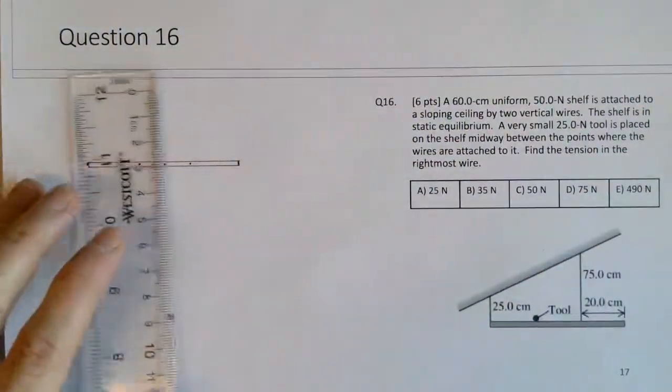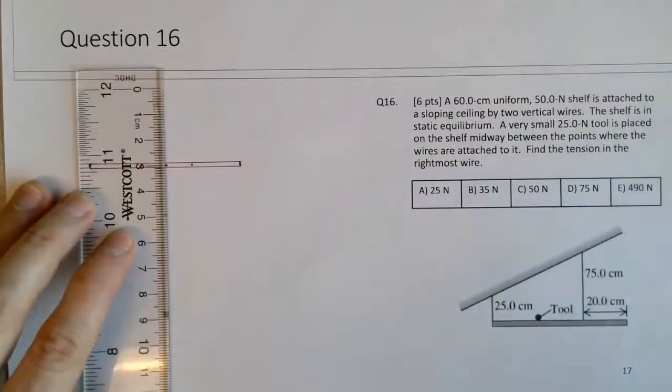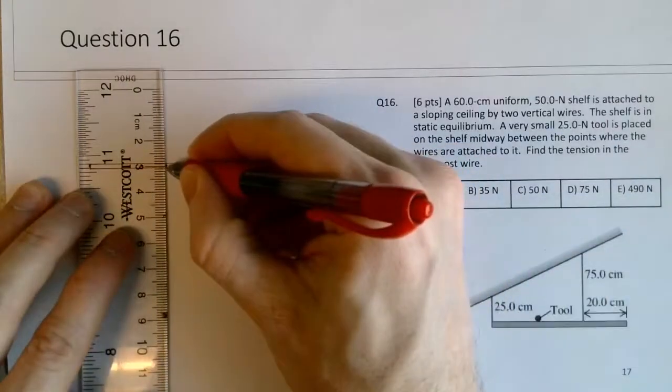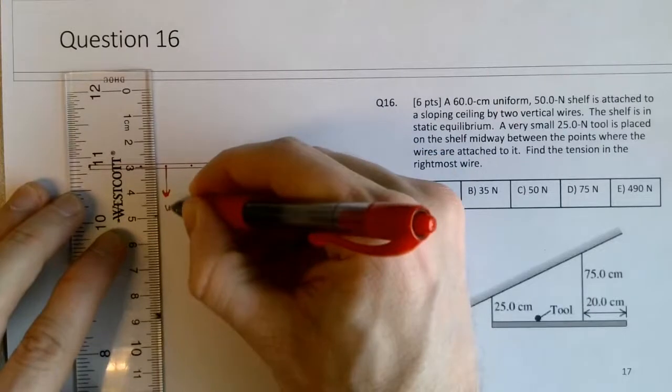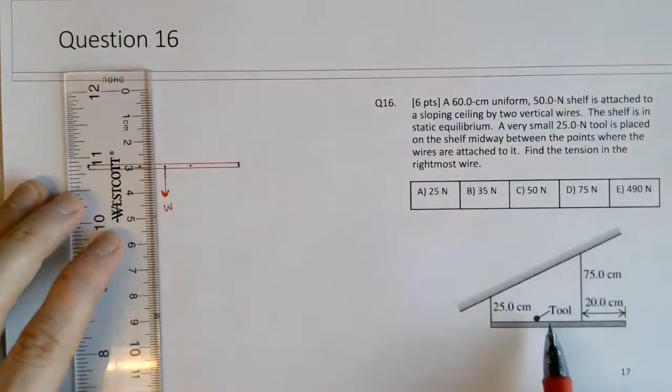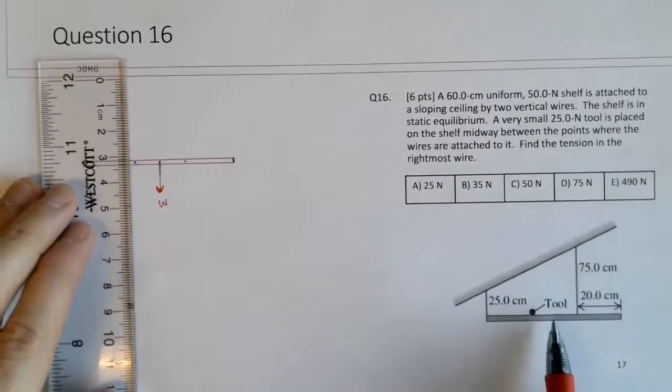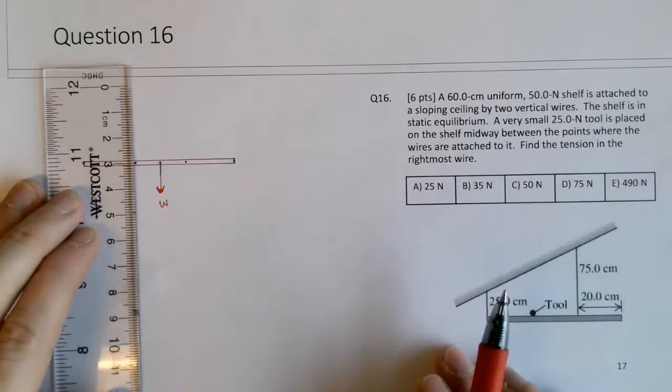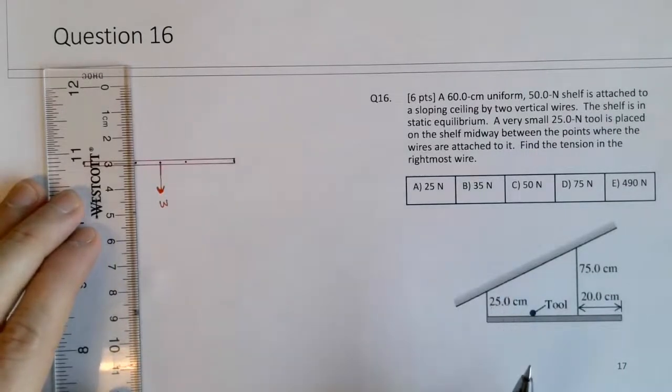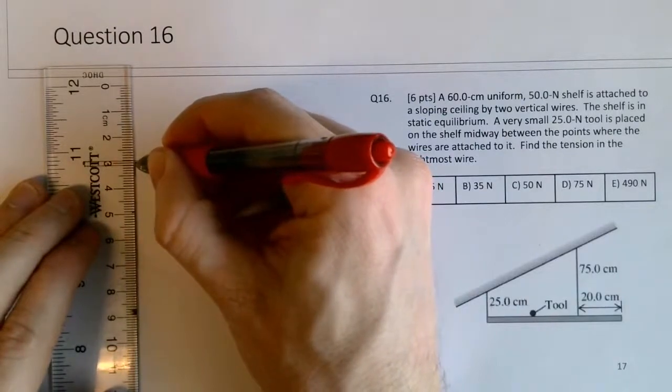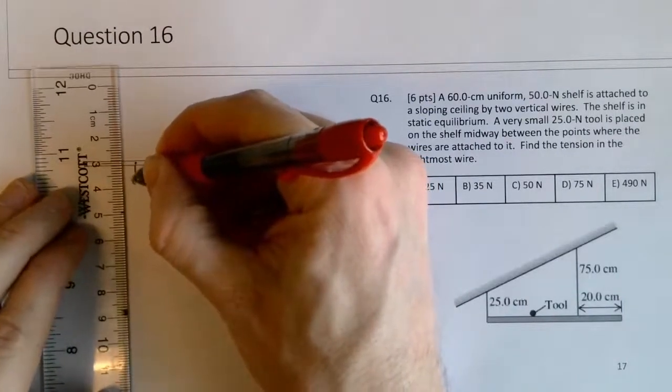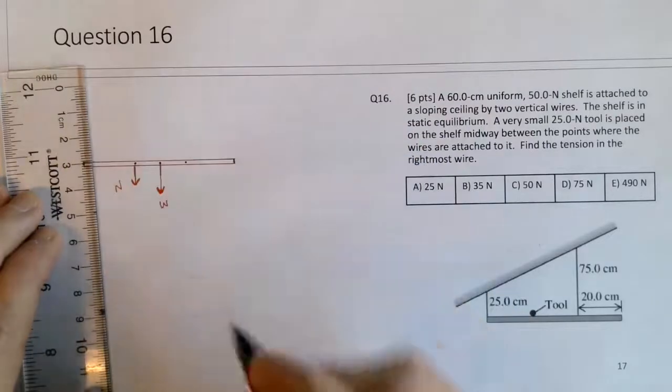So what we have here, right in the middle, is a weight force down. And the tool will exert a downward normal force. It's slightly smaller, so I won't draw this exactly to scale. This is a normal force for the tool.